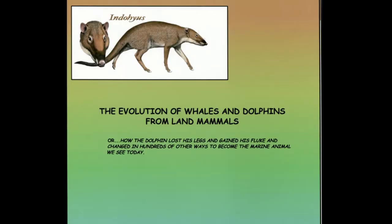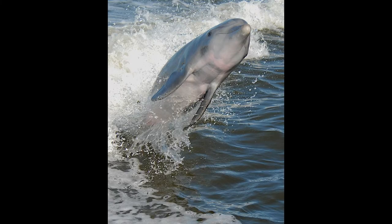The evolution of whales and dolphins from land mammals — or how did the dolphin lose his legs and gain his fluke, and change in hundreds of other ways to become the marine animal we see today?